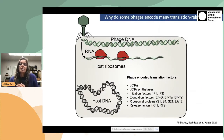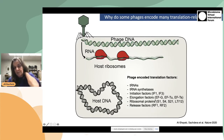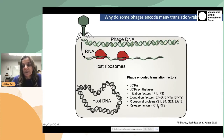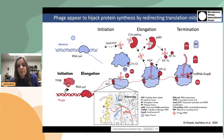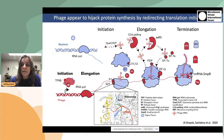Why might phages encode translation-related genes? To give you a sense of the list of translation-encoded factors found on these few hundred phages larger than 200 kb, we see tRNAs and tRNA synthetases, but also initiation factors, elongation factors, ribosomal proteins, and also release factors. We posited that the reason is to basically switch the function of the bacterial ribosome away from translating bacterial mRNAs to translating those of the phage.